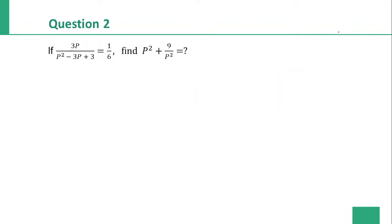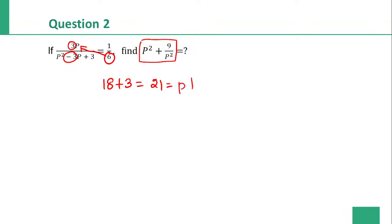Question number 2. Now we need to find p squared plus 9 by p squared. We already know p plus 3 by p equals 21. We use the formula: a squared plus b squared equals a plus b whole squared minus 2ab. Here a is p and b is 3 by p, so b squared is 9 by p squared. We apply p plus 3 by p whole squared minus 2ab.